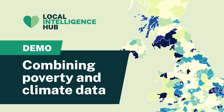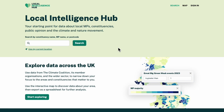Let's imagine I'm supporting local community organisers as part of a campaign on the intersection of poverty and net zero. How could the Local Intelligence Hub help me identify the parts of the UK we should focus our efforts in?